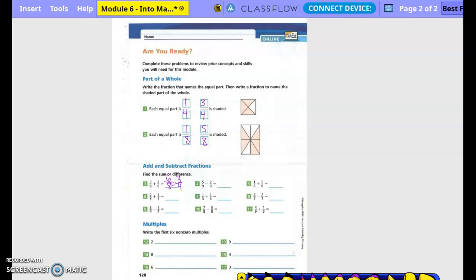So 5/9 minus 2/9 is 3/9. 1/6 plus 5/6 is 6/6. 2/5 plus 1/5 is? Three fifths. 1/3 plus 1/3 is? Two fourths. 4/7 minus 2/7 is? Two sevenths. 3/4 minus 1/4 is? Two fourths. 7/8 minus 5/8 is? Two eighths. And then 4/9 plus 1/9 is? Five ninths.